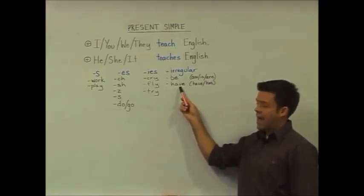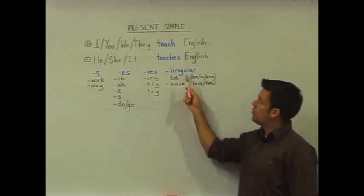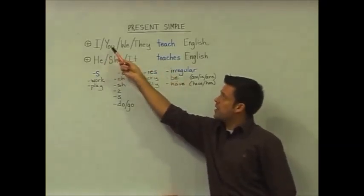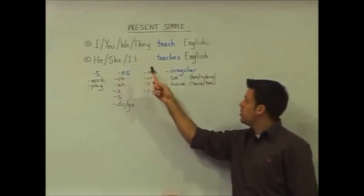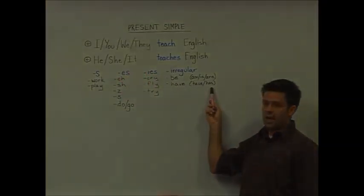Finally, we have have, which stays as have for these subjects: I, you, we, and they. But for he, she, and it, we change have to has.